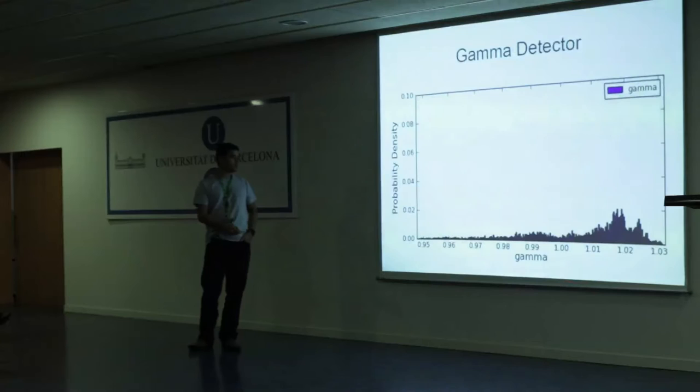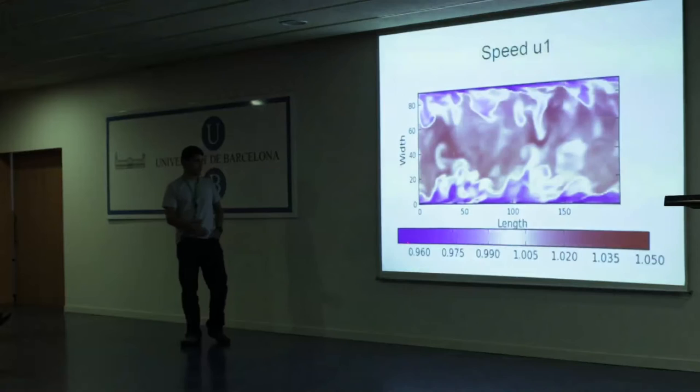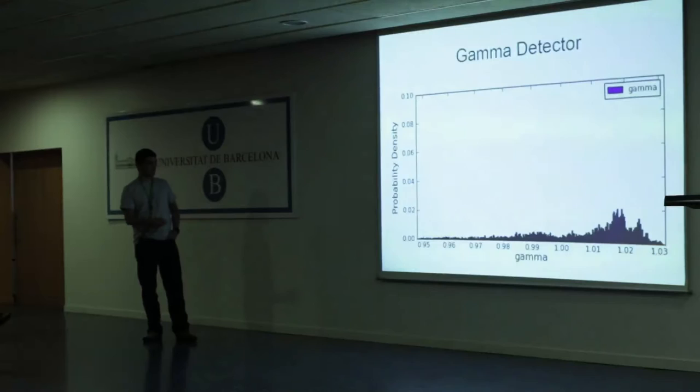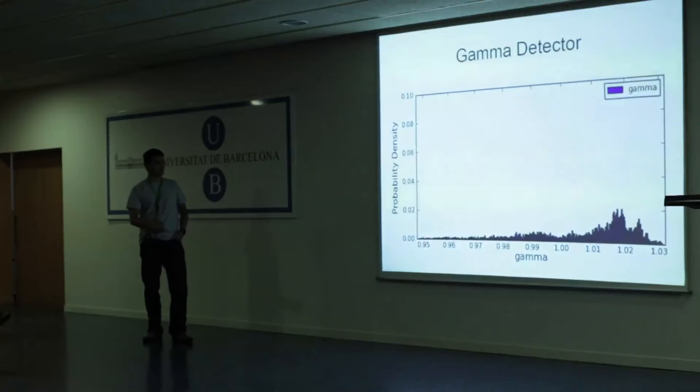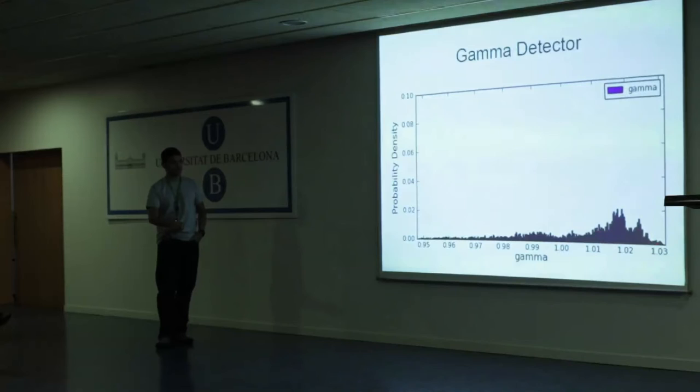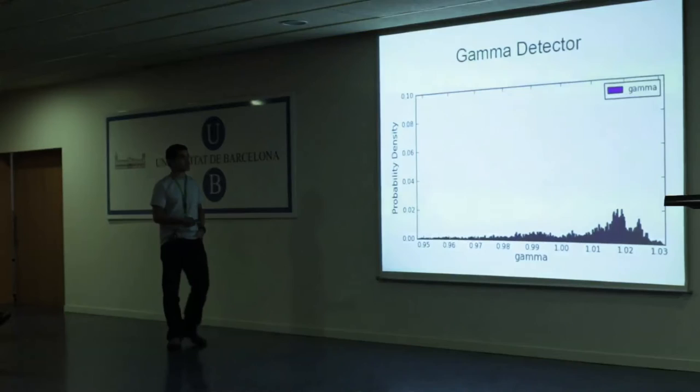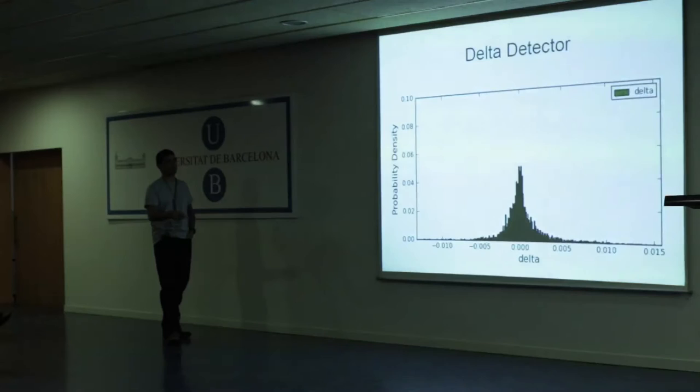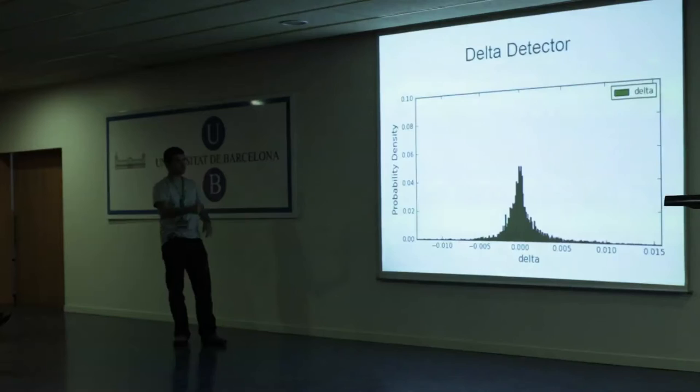Coming back to the detectors: this is the distribution of the data set. As mentioned, the values are between 0.96 and 1.05 for the x-velocity. This is the histogram you get. If you have a corrupted value out of this interval, it is very likely due to a corruption. Now for the delta detector - the space difference between consecutive neighbor points - you see a pretty beautiful Gaussian shape.